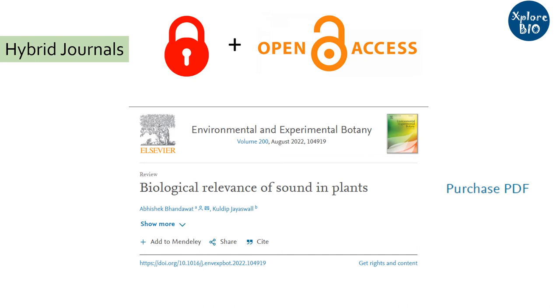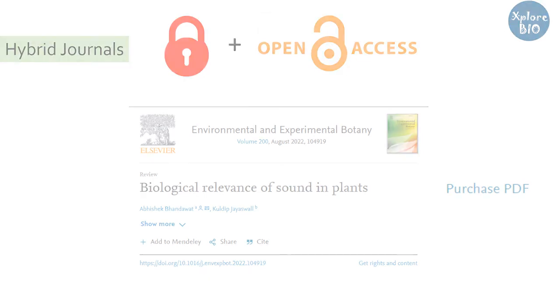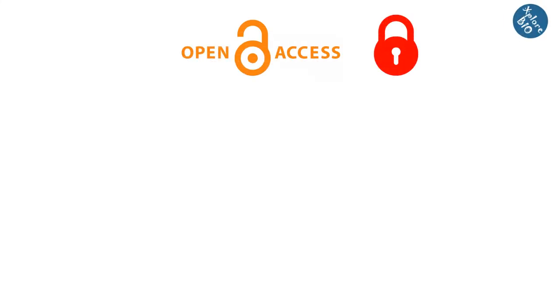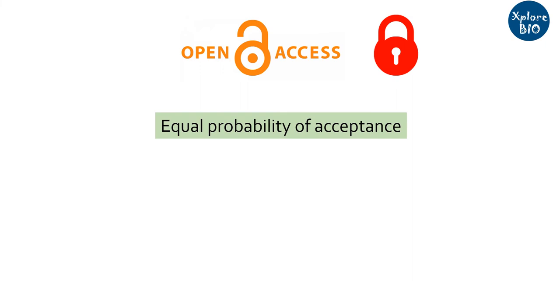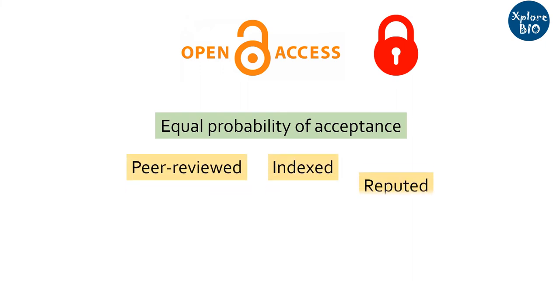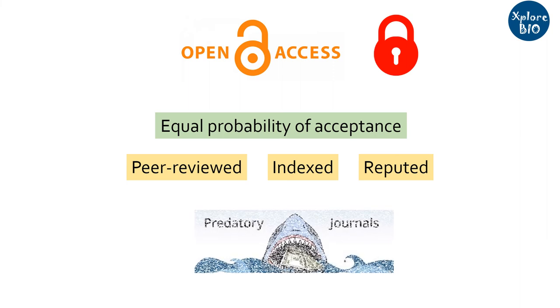The journal provided me a link to share the complete article for free for the first 50 days. Whether it is an open access journal or subscription-based, it does not really affect the chances of acceptance of the paper, provided that the journal is peer-reviewed, indexed, and reputable. Stay away from predatory journals, which publish your paper without getting it reviewed, just by paying some money.